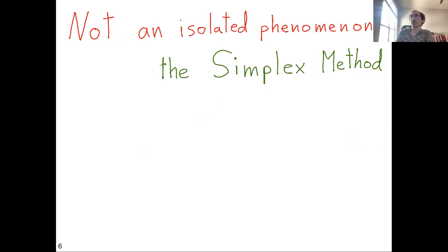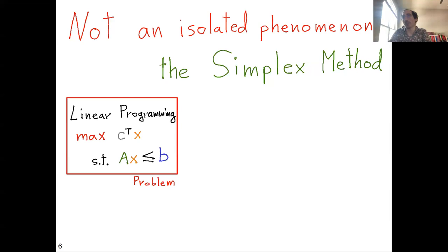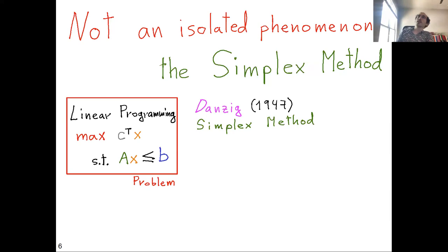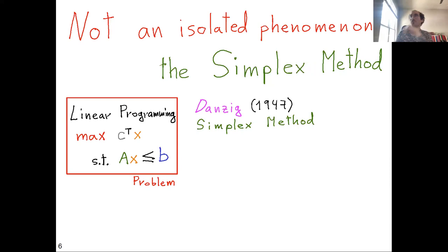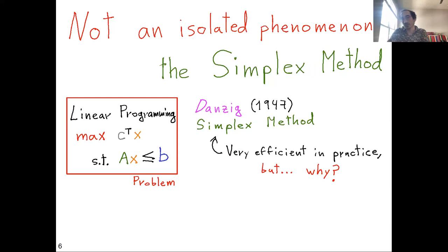This is not an isolated phenomenon. Another famous case is the simplex method. In linear programming, we want to maximize a linear function over a convex polytope, typically given by Ax ≤ b. The simplex method was invented by Dantzig in 1947 — he famously solved what he thought was a homework problem but was actually an open problem he'd arrived late to class for. He developed the simplex method and it was very efficient in practice. But the question was: why?